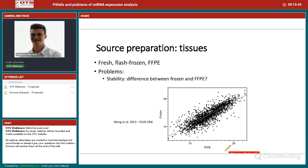In that NGS study, these were quite young tissues — about one to two years old — and you can see that the correlation between FFPE and frozen paired tissues is maintained, so microRNA is preserved. But again, it is more about the age of the tissue that can really influence the stability of the microRNA.